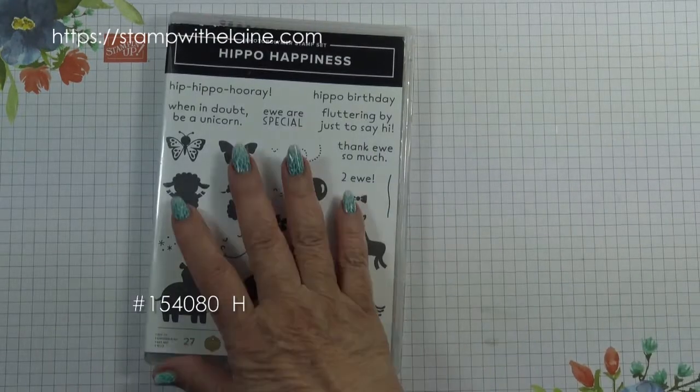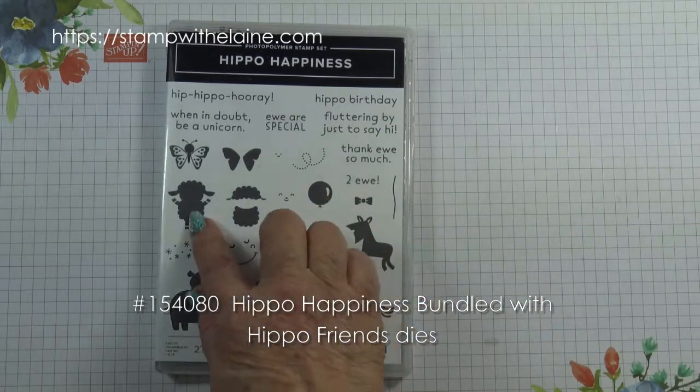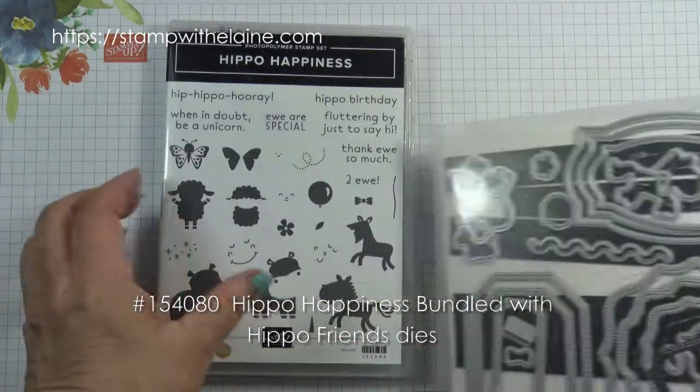To make it I'm using the HIPAA happiness bundle. I wanted the lamb and these are the dies that go with it.